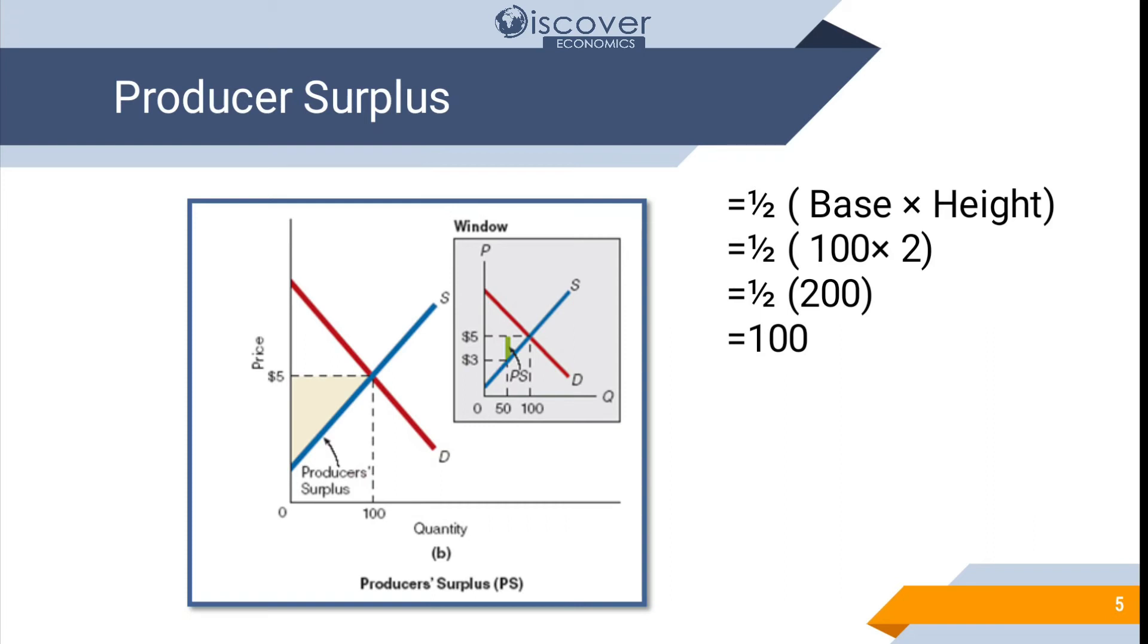So put all this stuff into the data you can see 1/2 base times height. So base is 100 and height is 2. 5 minus 3 will be 2 and 100 times 2 will be 200 and we will take the half of it and we will get 100. So producer surplus is 100 here.